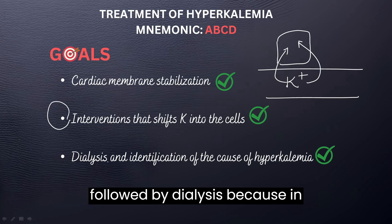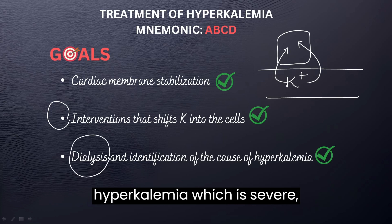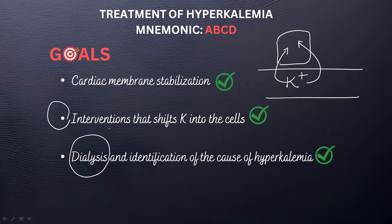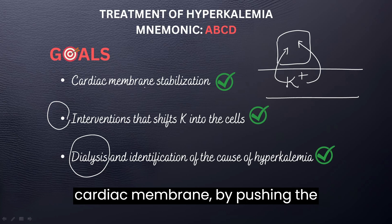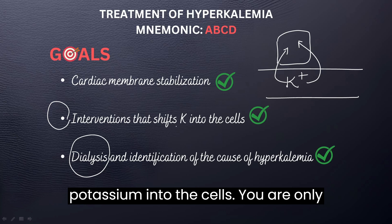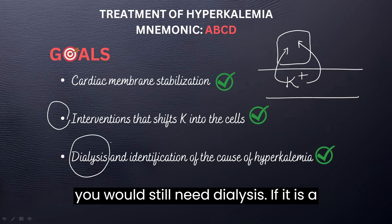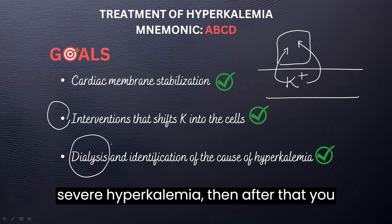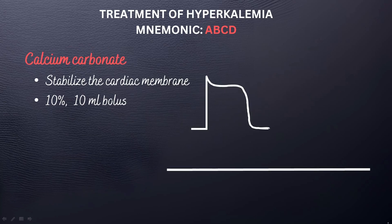This is going to be followed by dialysis. Because in severe hyperkalemia, all the interventions — by stabilizing the cardiac membrane, by pushing the potassium into the cells — you're only doing that to buy time. So at some point, you would still need dialysis if it is a severe hyperkalemia. Then after that, you would like to find the cause and treat.